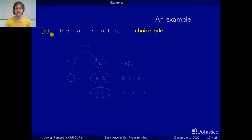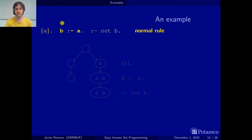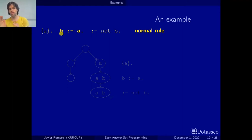The choice rule allows us to make a choice on a. It can be read as: a may be in an answer set, or we may add a to an answer set. It's a rule that allows us to choose whether we add a or not — that's why it's called a choice rule. Then we have a normal rule that says if a is in an answer set then b must also be in an answer set. We can read it from left to right: b must be in an answer set if a is in an answer set.